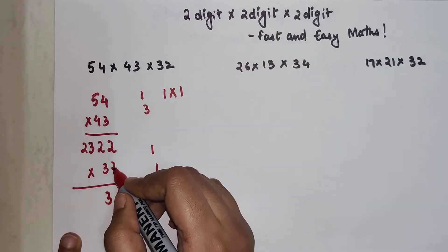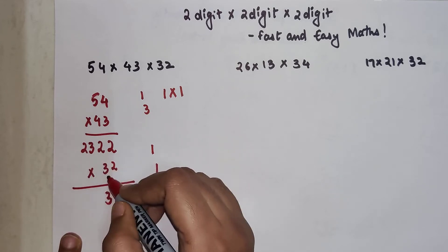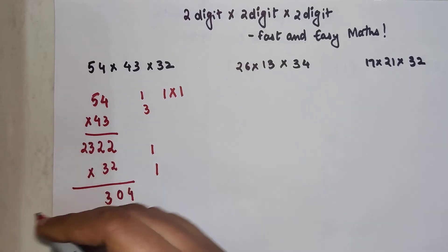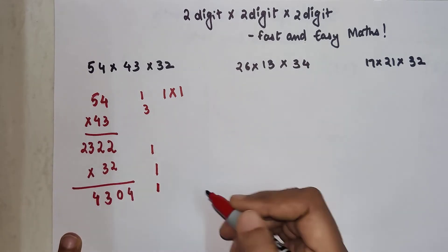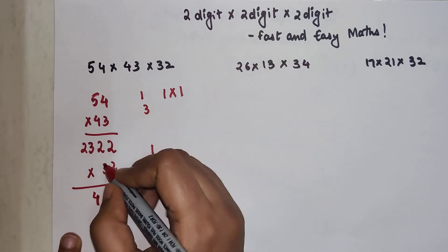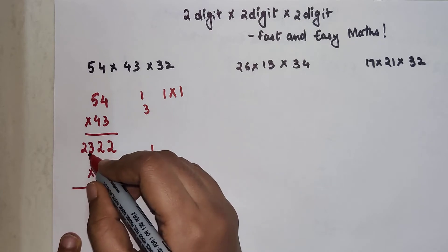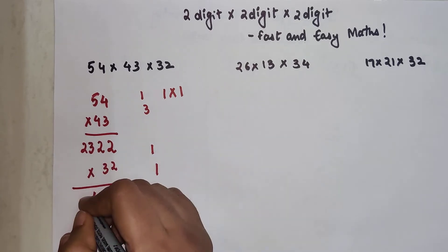Now we are going to multiply this 2 with this 2 which is 4 and 3 into 3 which is 9. So 9 plus 4 is 13 plus 1 is going to get you 14 and 1 is still carried. So now we are left with 3 into 2 which is 6 plus 1 which is going to get you 7.